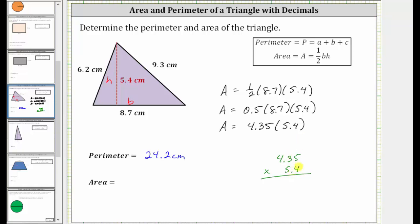We begin by multiplying by four. 5 times 4 is 20. Record the zero, perform an exchange with the two. 4 times 3 is 12, plus two is 14. Record the four, perform an exchange with the one. 4 times 4 is 16, plus one is 17.